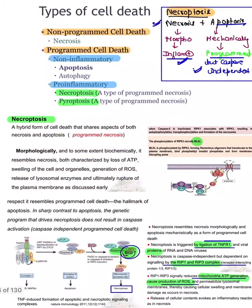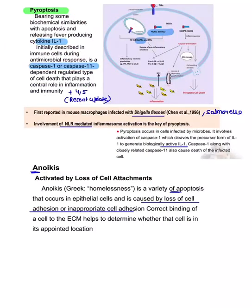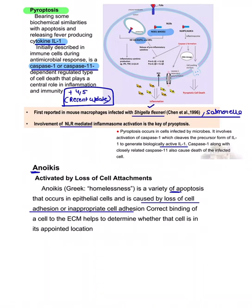Pyroptosis is also pro-inflammatory. It involves cytokines IL-1 and caspase 1 or 11; the recent Robbins update also mentions caspase 4 and 5. It was first discovered in Shigella but may also be found in Salmonella.